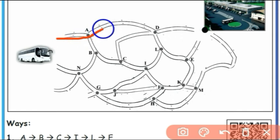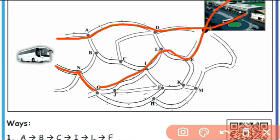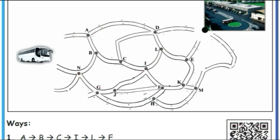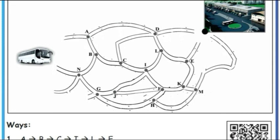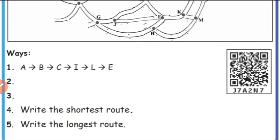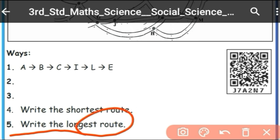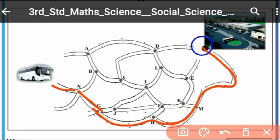Another route is: A, D. The next route is: N, G, I, L, E. The shortest route is A, D. The longest route passes through N, G, H, M — this is one of the longest routes.